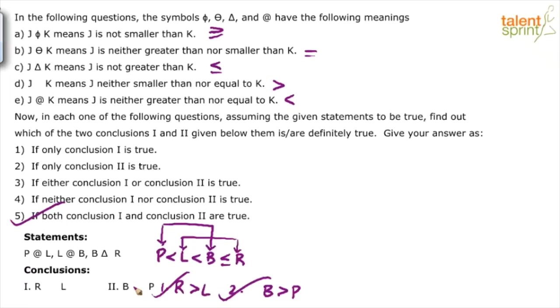Coded inequalities is simple — nothing complex about it. The only thing some of you misunderstood is that the missing symbol is not missing — it was a space. And the same space was given in the conclusions as well.